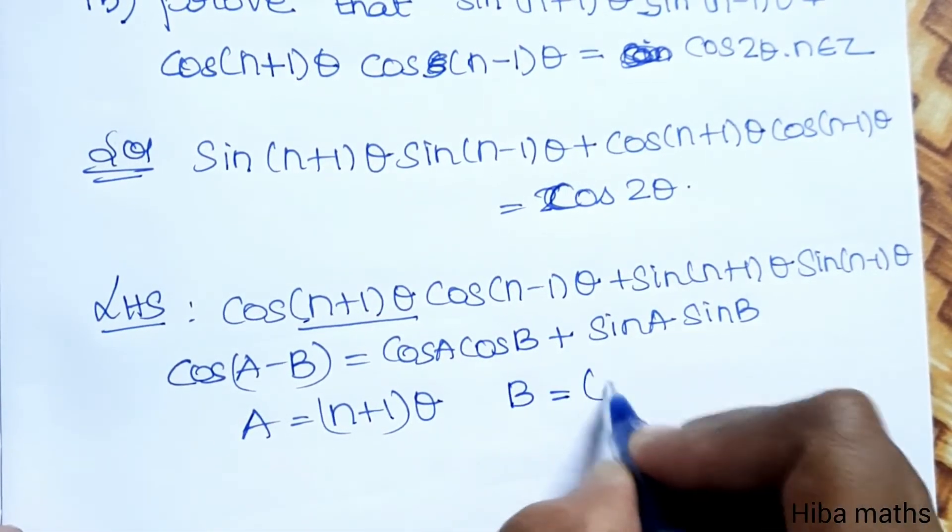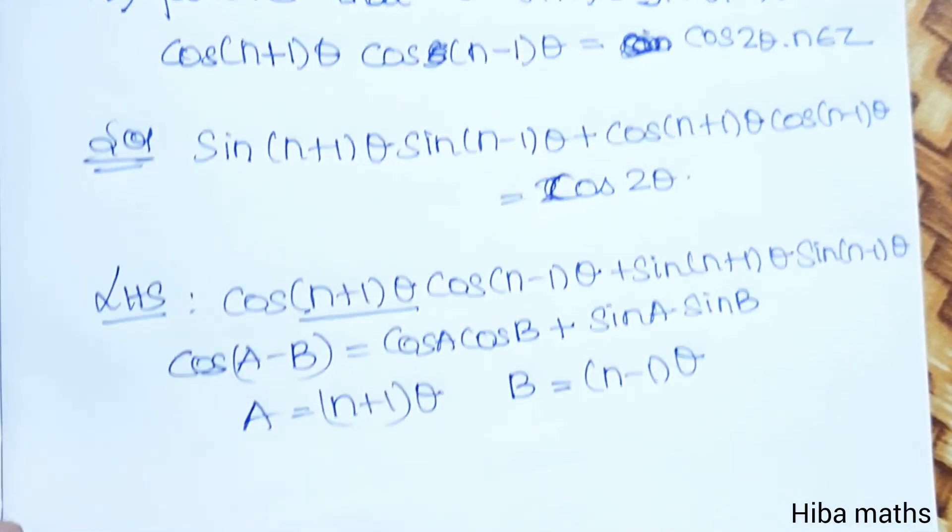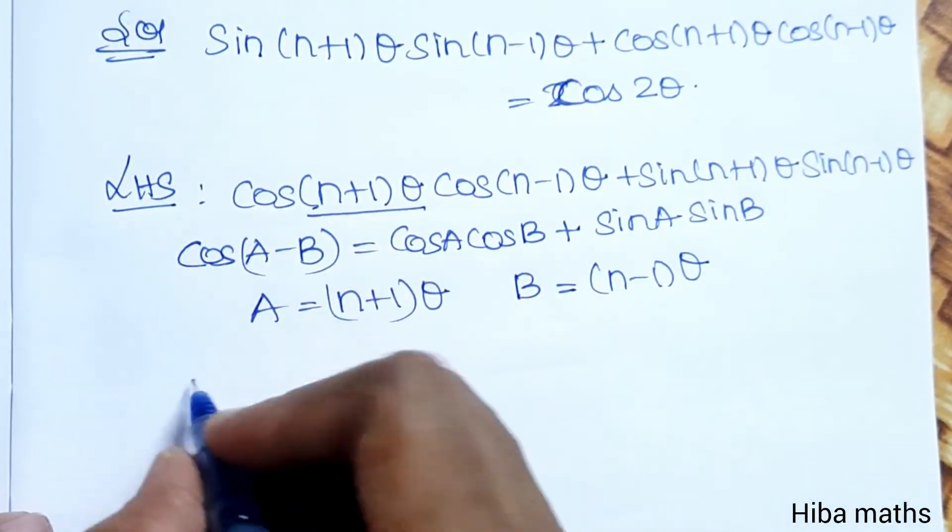Here A is (n+1)θ and B is (n-1)θ. Now substituting into cos(A-B), I will expand using the formula.